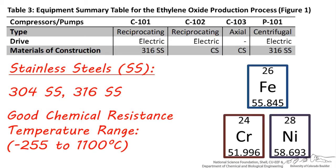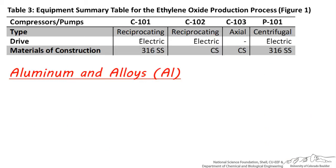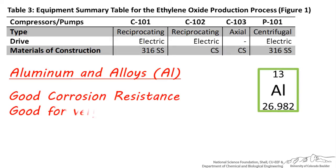Stainless steel is also used for very low and high temperature applications, up to around 1100 degrees centigrade. Aluminum, abbreviated AL, and aluminum alloys are mostly made of aluminum, and are great choices when a light, corrosion-resistant material is required. Aluminum is one of the best choices when very cold refrigerants are being used.